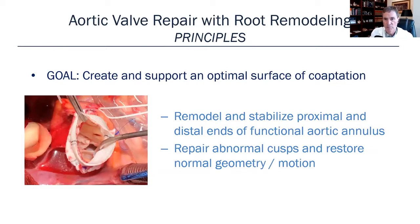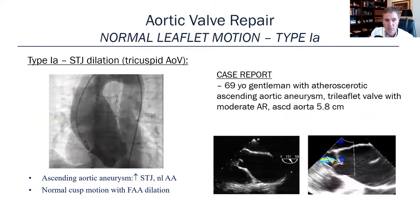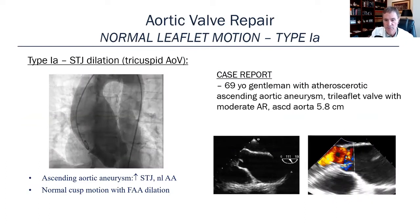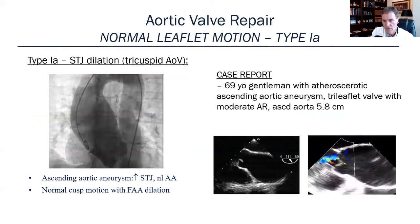What are the principles of aortic valve repair? The overarching goal is to create and support an optimal surface for coaptation of the leaflets. We can remodel and stabilize the proximal and distal ends of the functional aortic annulus in types 1A through 1C. Then we have to repair abnormal cusps and restore their normal geometry in types 1D and 2. Here's type 1A — sinotubular junction dilatation pulling the tricuspid aortic valve apart, causing a central jet due to symmetrical dilatation of the aorta above the valve.